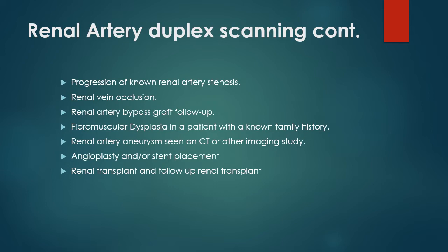Additional indications include: progression of known renal artery stenosis, renal vein occlusion, renal artery bypass graft follow-up, fibromuscular dysplasia in a patient with a known family history, renal artery aneurysm found on CT scan or other imaging study, angioplasty and/or stent placement, renal transplant, and follow-up renal transplant. These are all indications for a physician ordering a renal artery duplex.